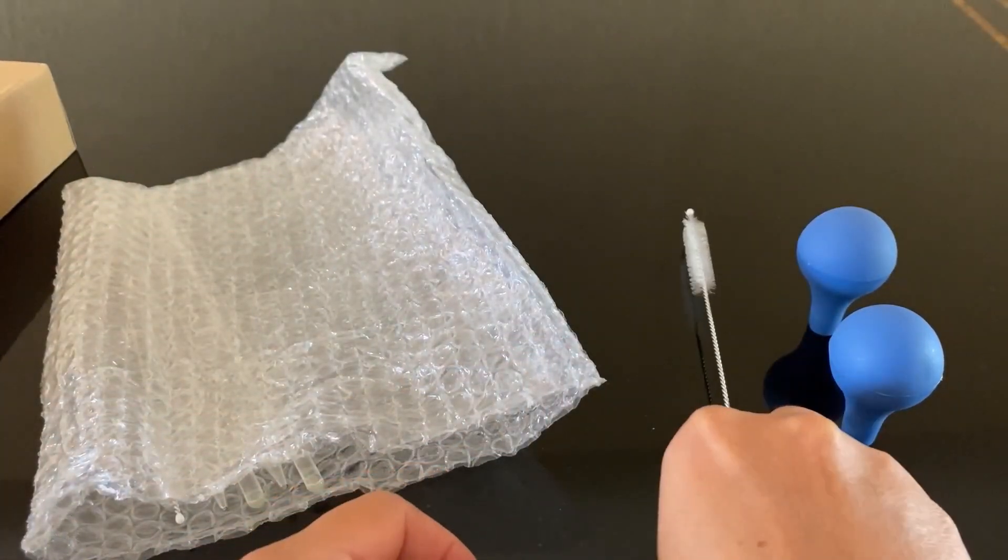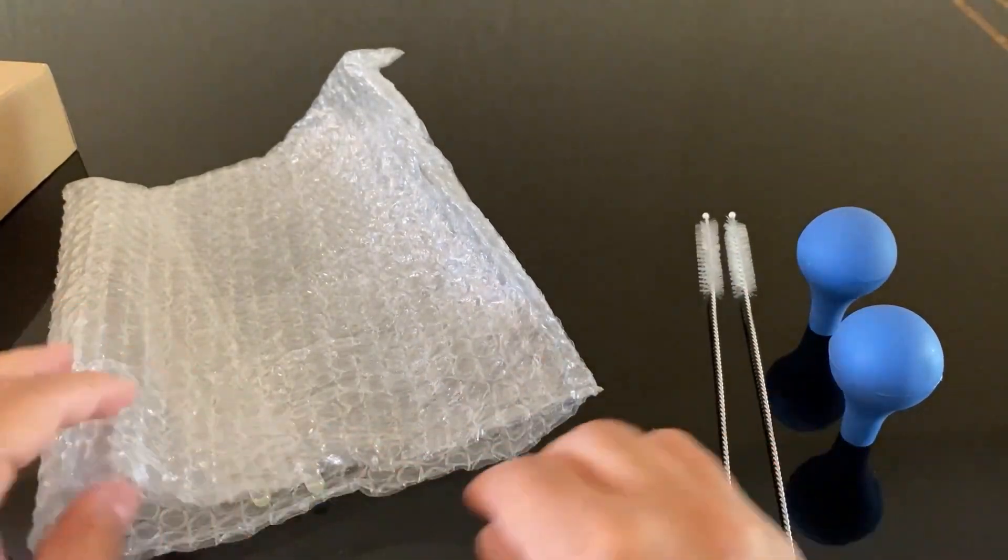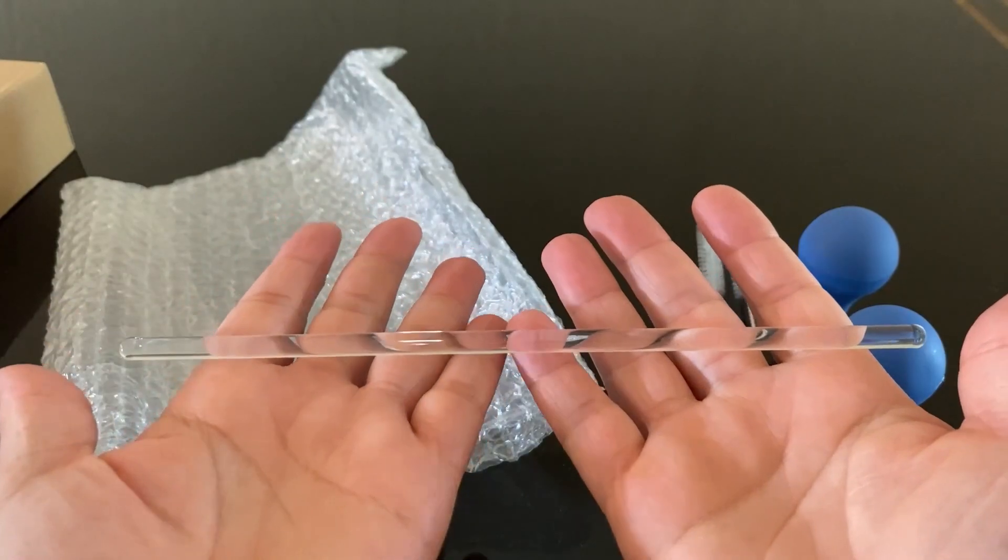So these are the cleaning brushes. There we go, they are nice and neat. And here we have our glass stir rods, which are about 20 centimeters in length, nice and good quality.